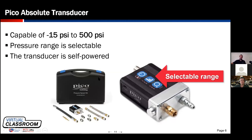Pico makes a phenomenal lab scope and also a pressure transducer known as the WPS 500. You can find this transducer standalone for about $800 US, or in a kit with accessories and hoses for about $1,400 US — though don't quote me on that. It's worth its weight in gold. Bren has made his return on investment many times over because he uses these tools and they give him a lot of information.